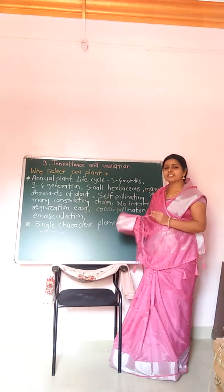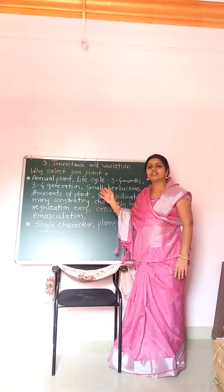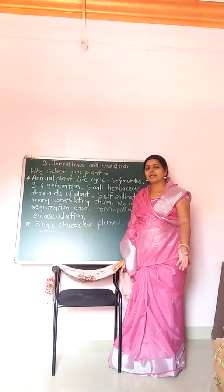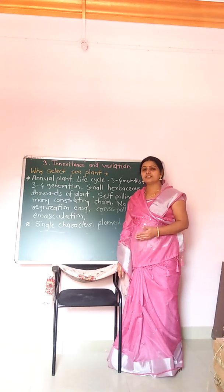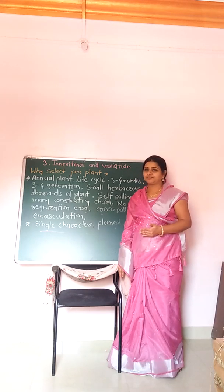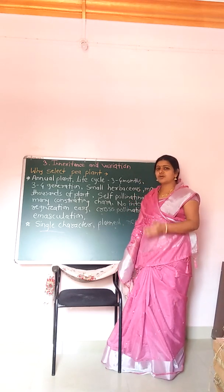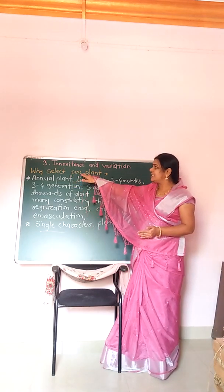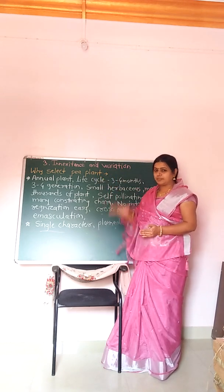In the previous lecture we started chapter number three, that is Inheritance and Variation. In that chapter we saw what is inheritance and who was Gregor Mendel and his work. Today we will see why Mendel selected the garden pea plant.